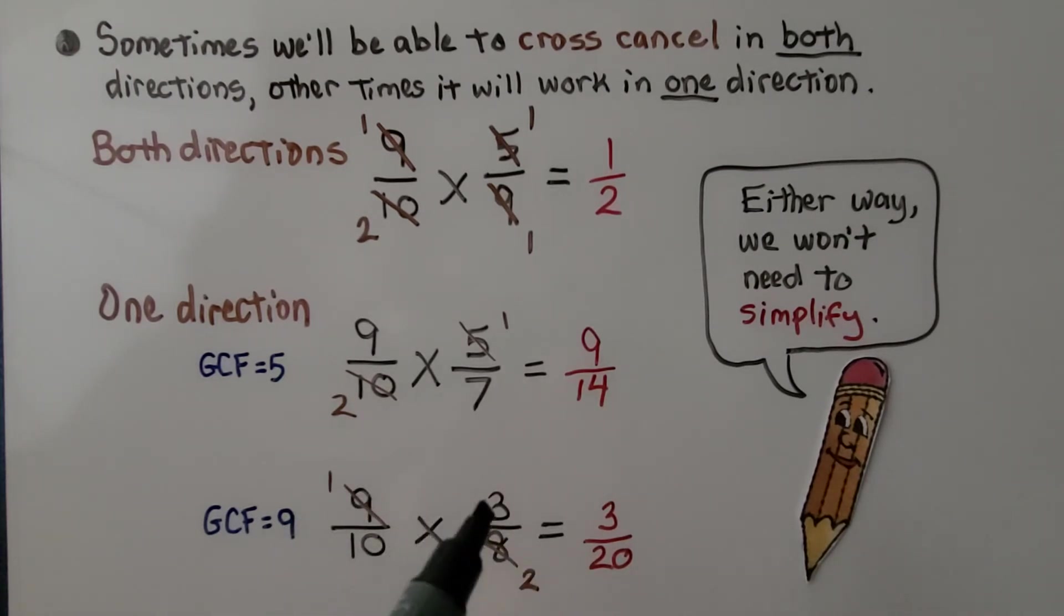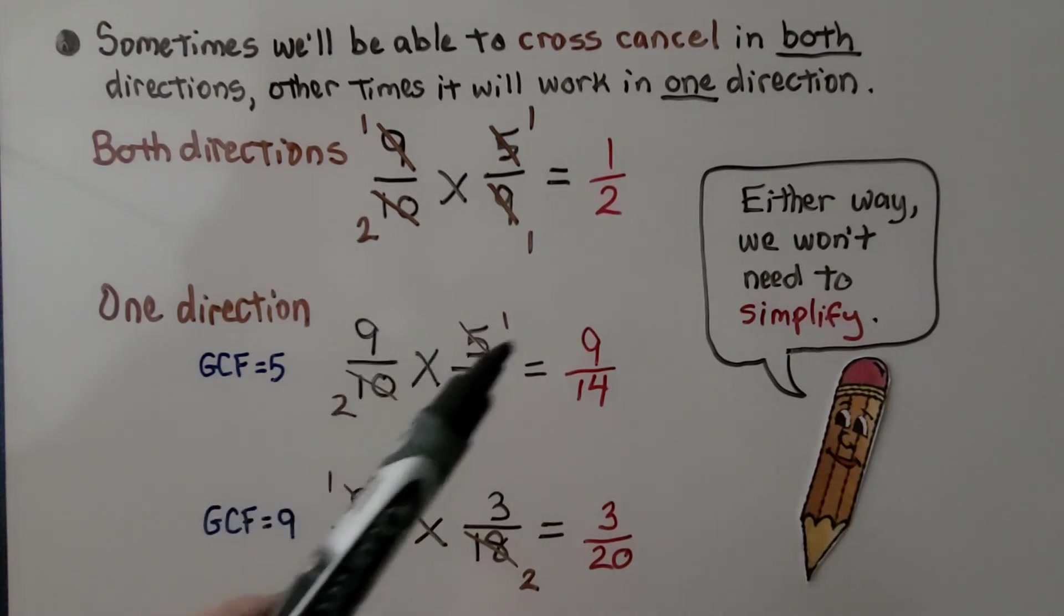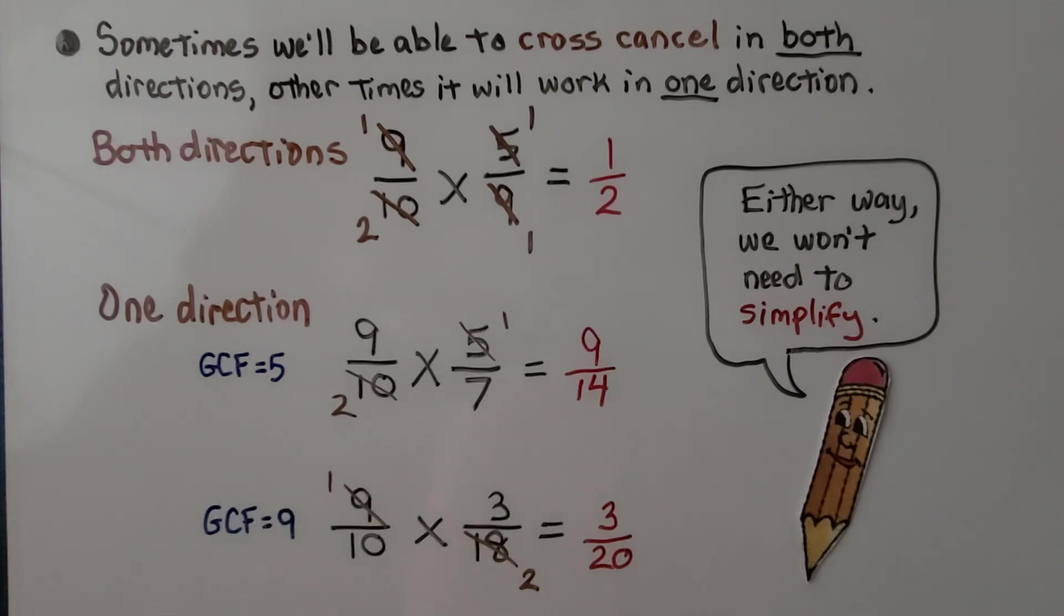For 9 tenths times 3 eighteenths, there is no common factor for 3 and 10. But they have 9 in common. 1 times 9 is 9, and 2 times 9 is 18. This cancels out as a 1 and this as a 2. We do 1 times 3 is 3. 10 times 2 is 20. Don't need to simplify. It's 3 twentieths. So don't worry. If you can only go in one direction, it's still going to help you.